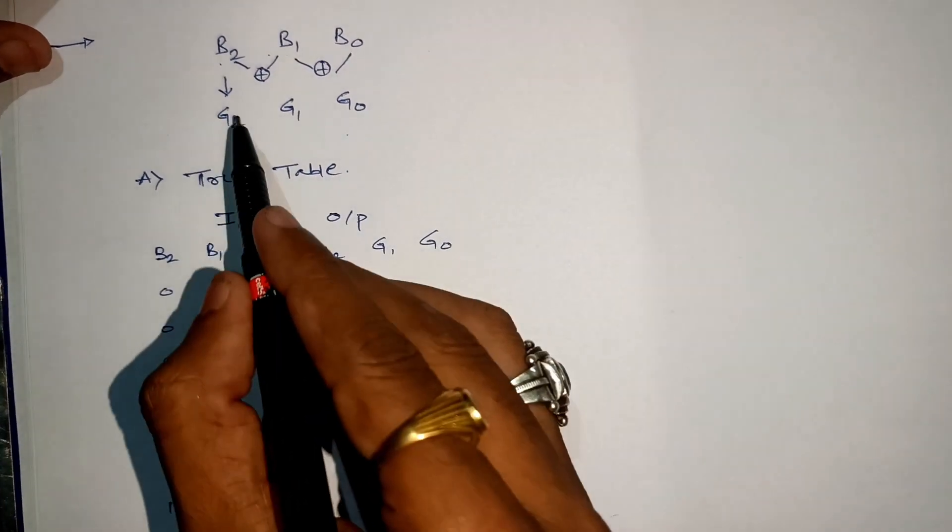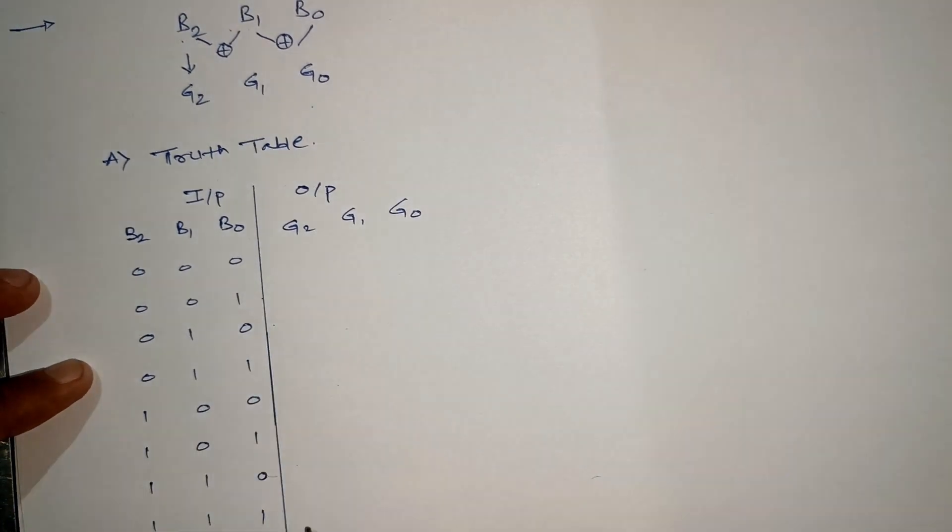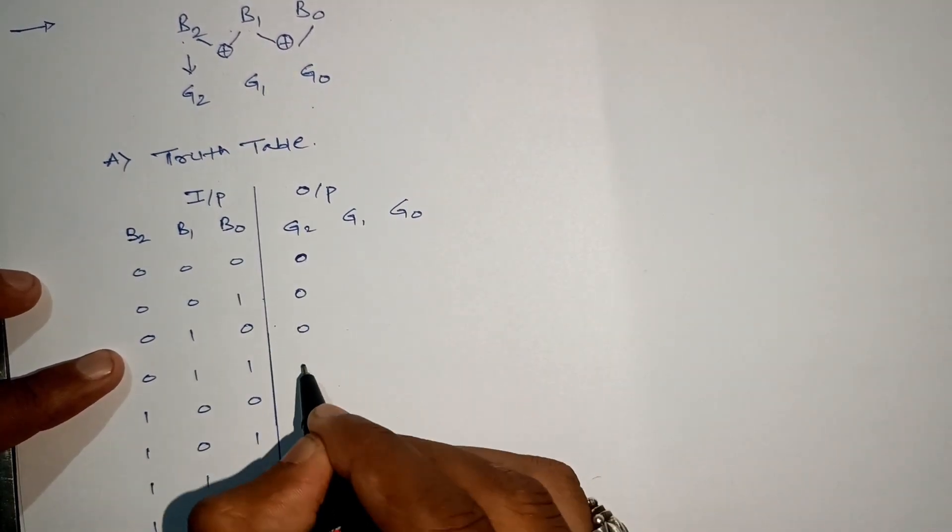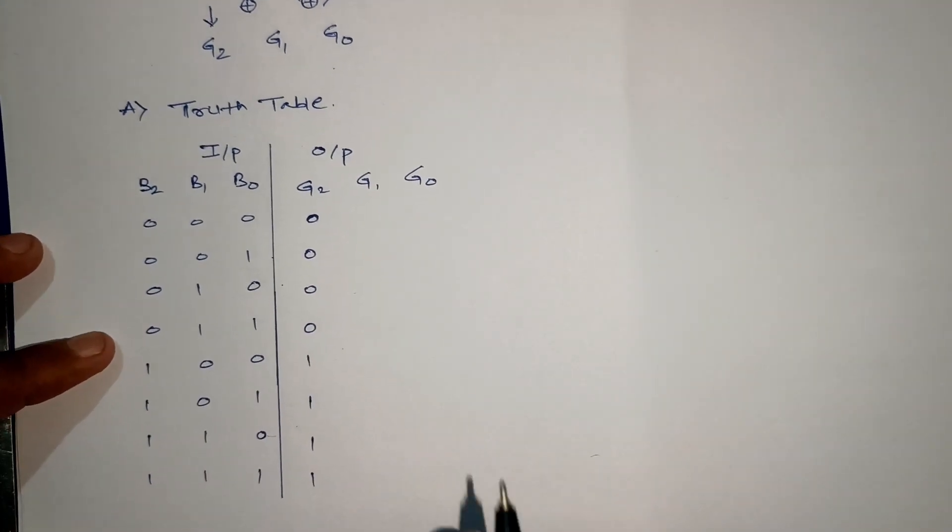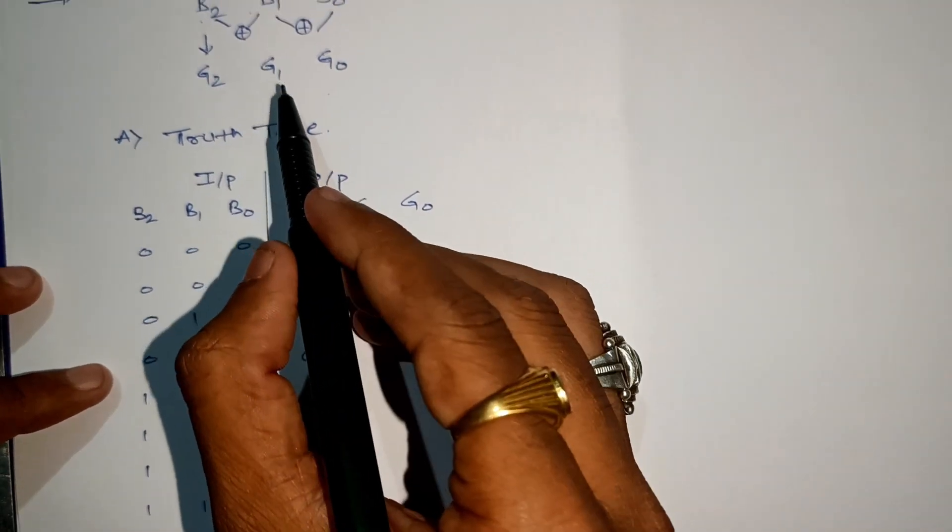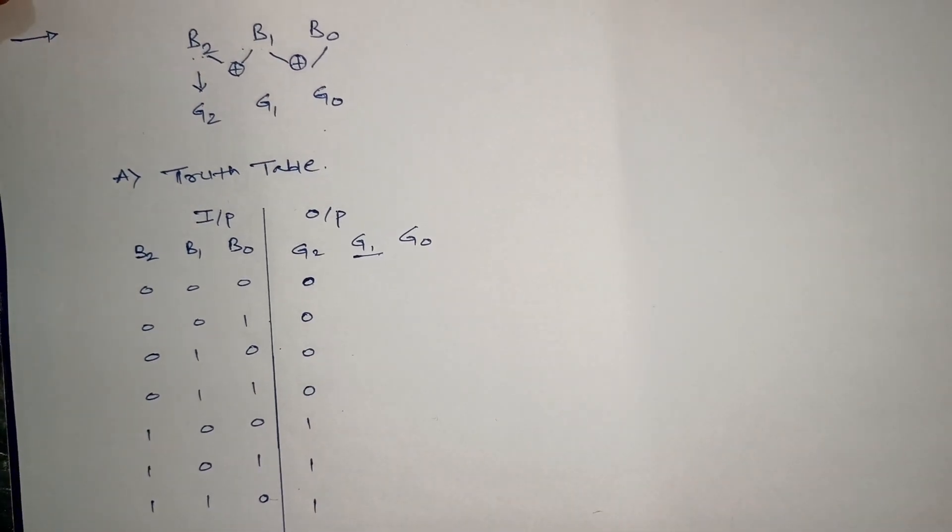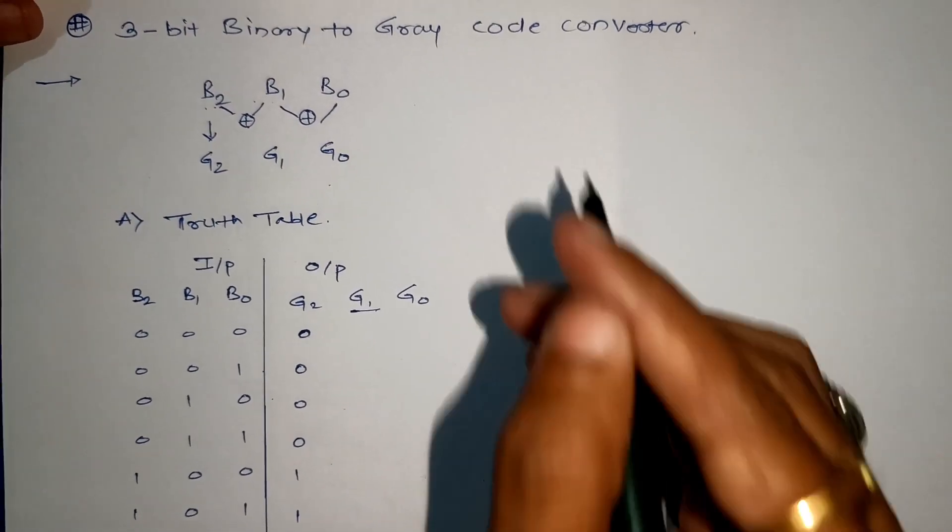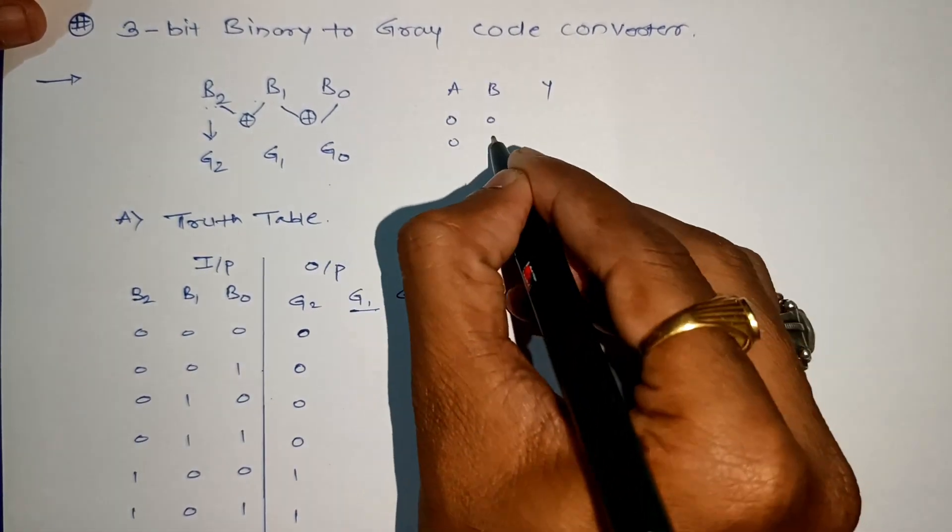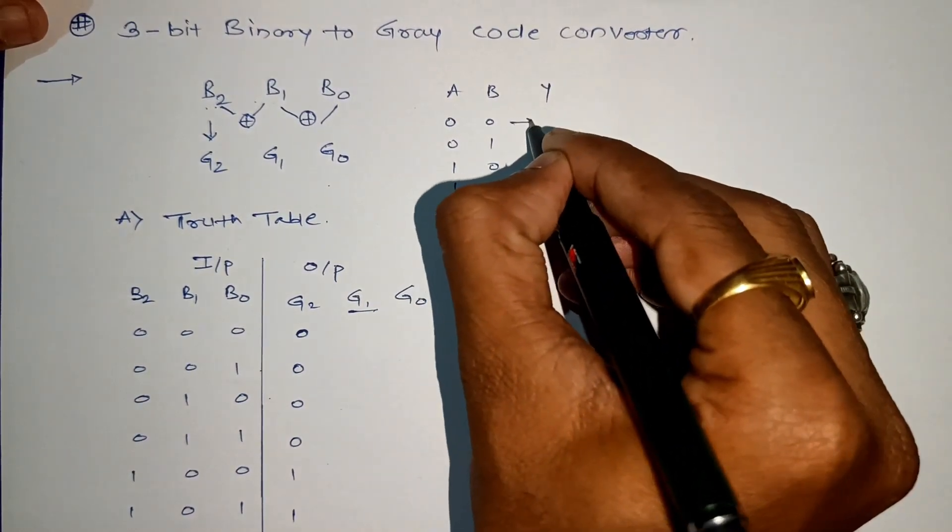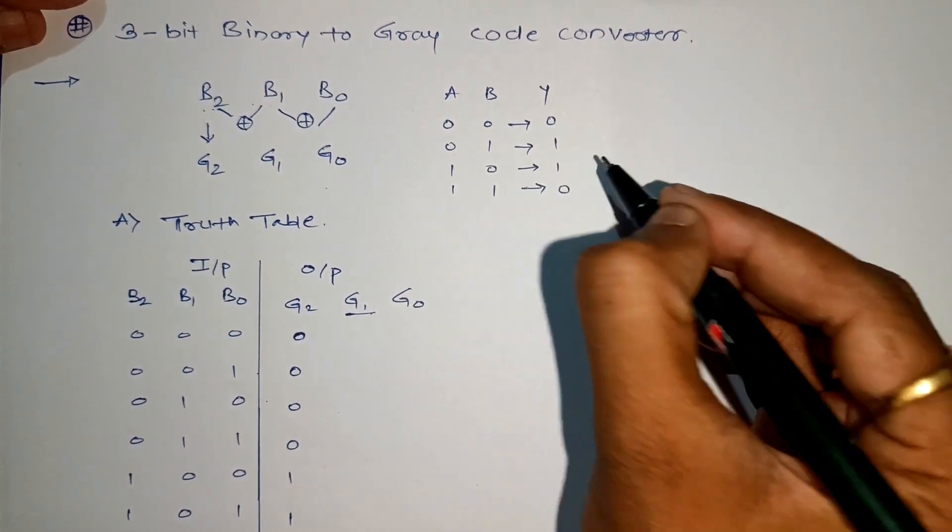First step: G2 equals B2, so whatever we have written across B2 we will copy across G2. For the first four combinations zero, next four combinations it is one. Now let's concentrate on G1. G1 is nothing but XORing of B2 with B1. The XOR gate property: when both inputs are same, output is zero, and when inputs are different, output is one.